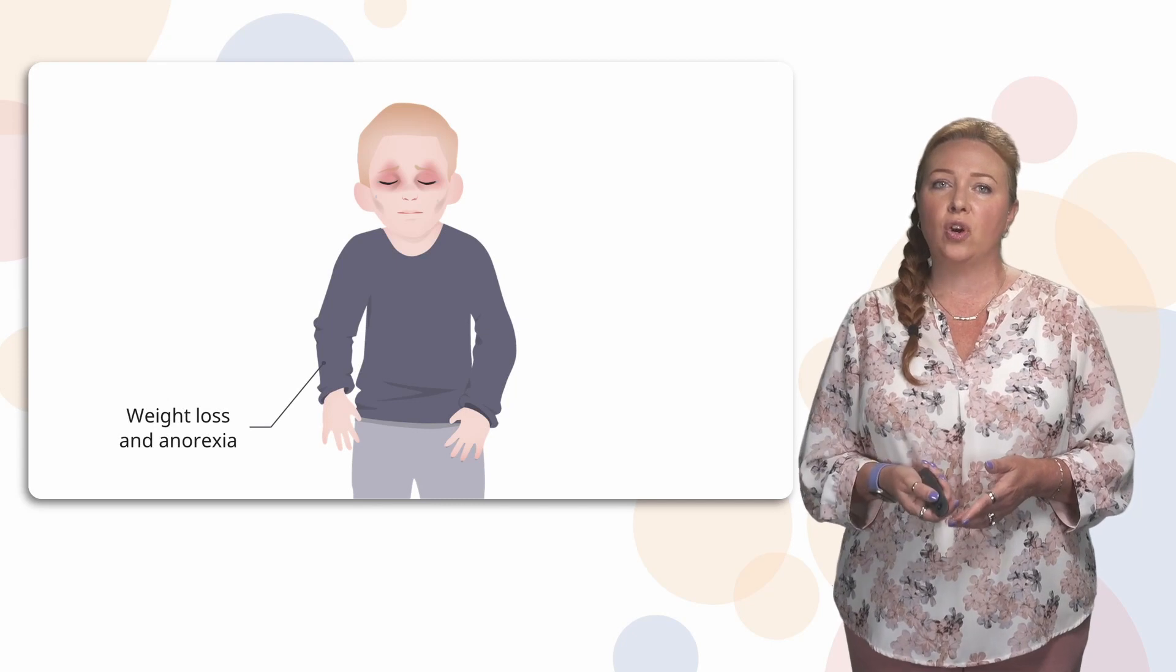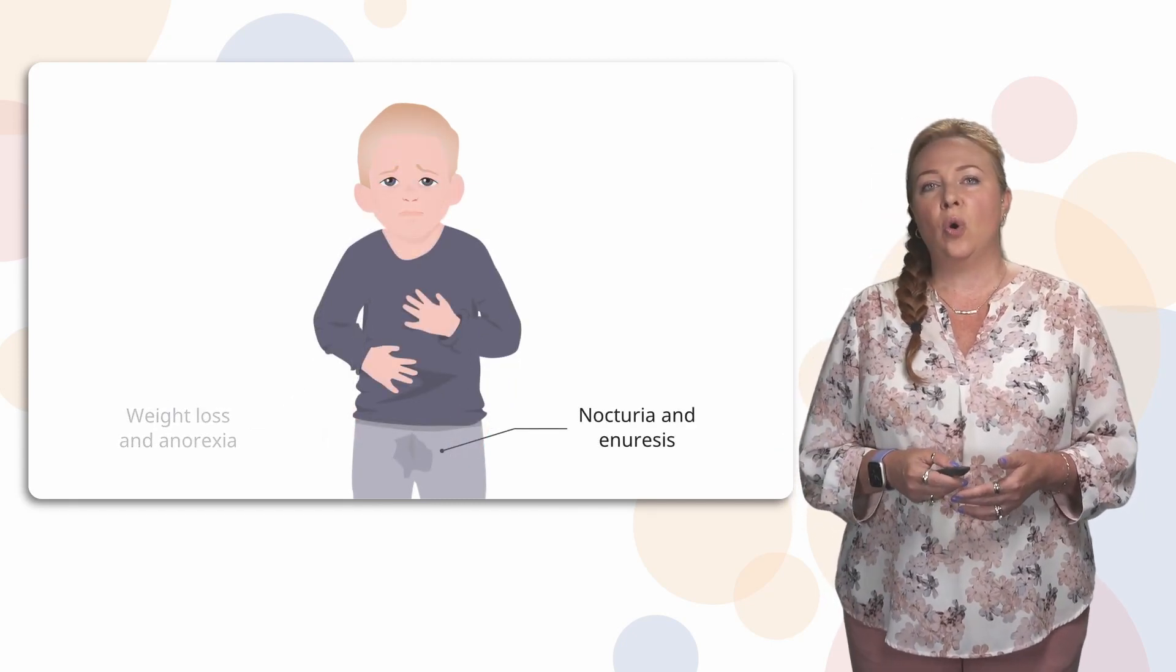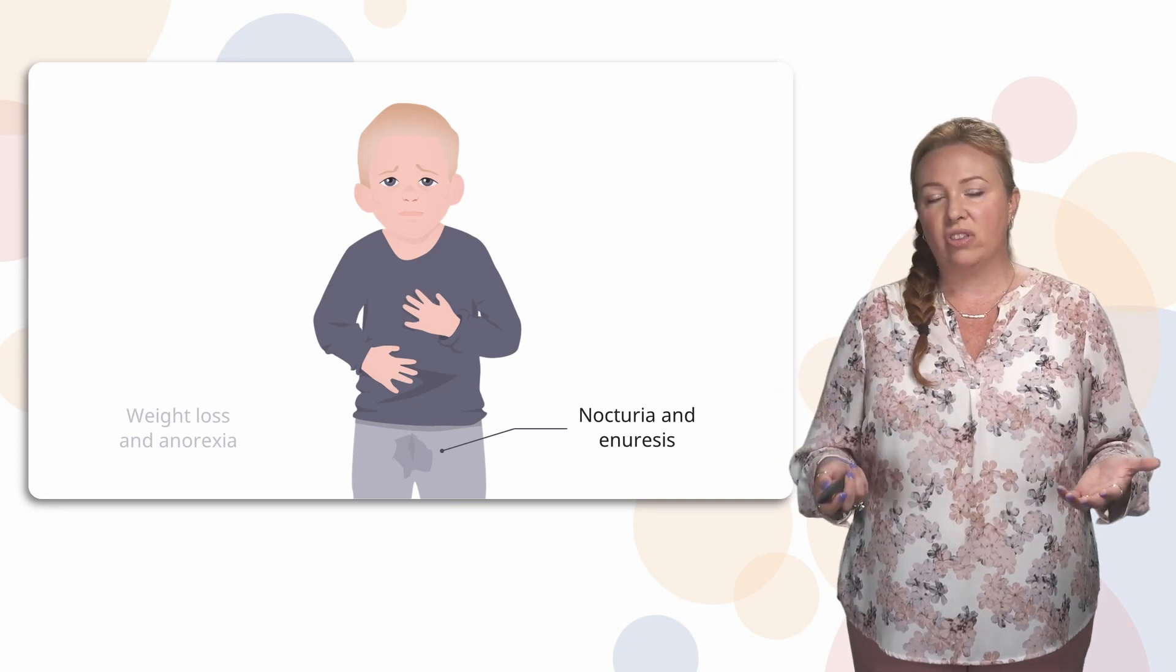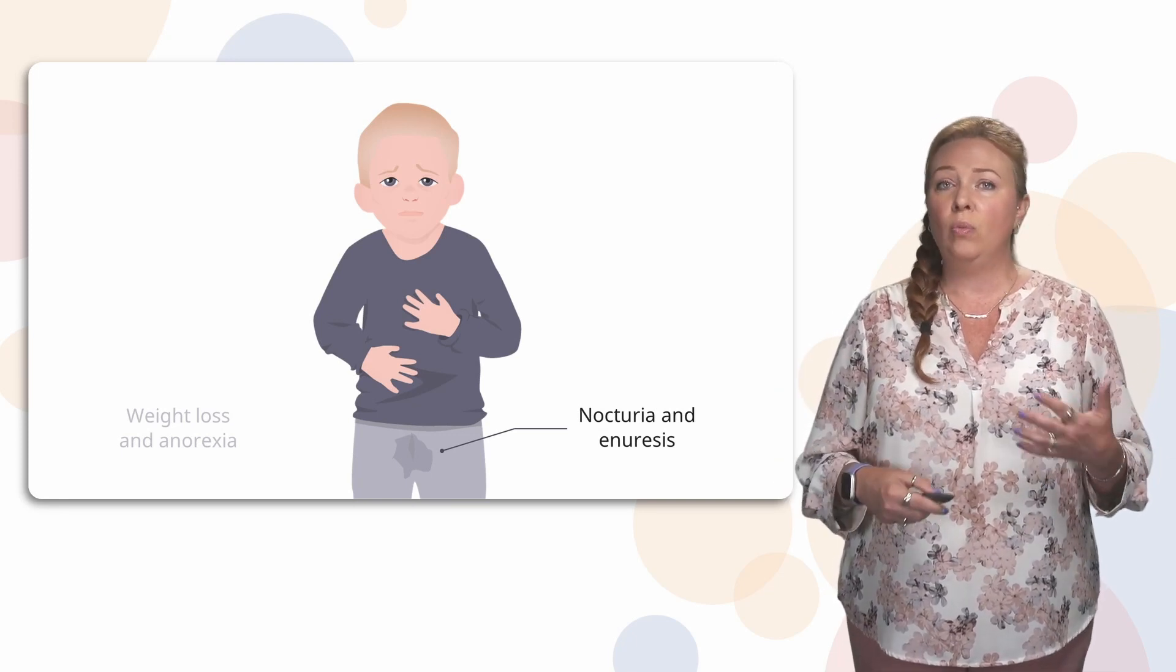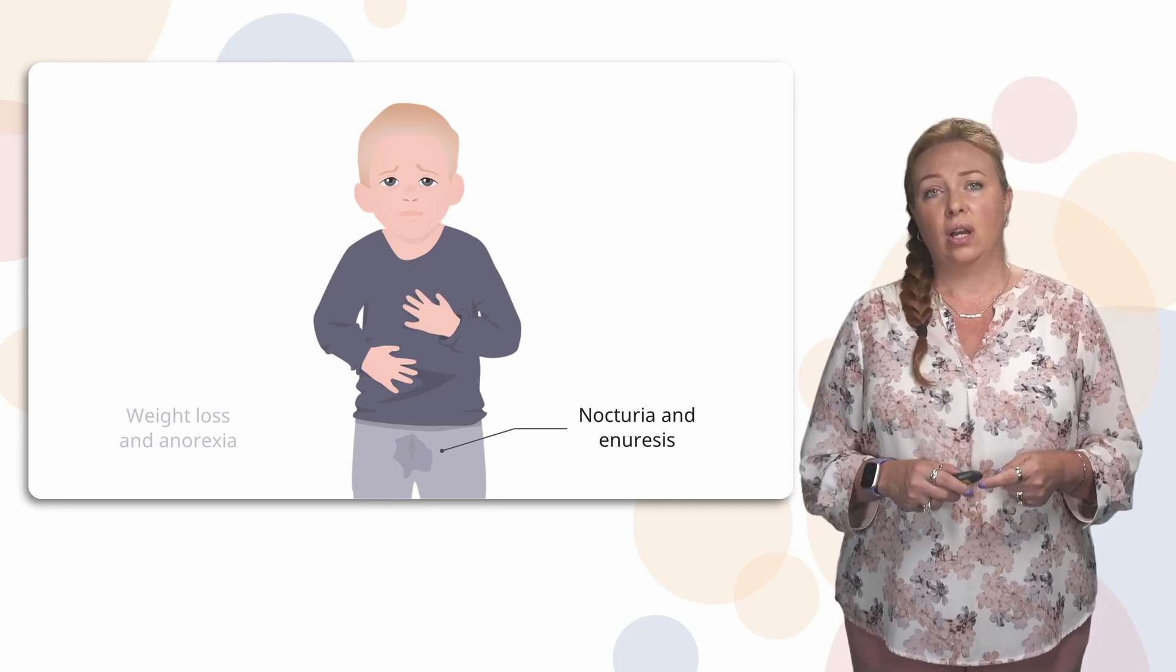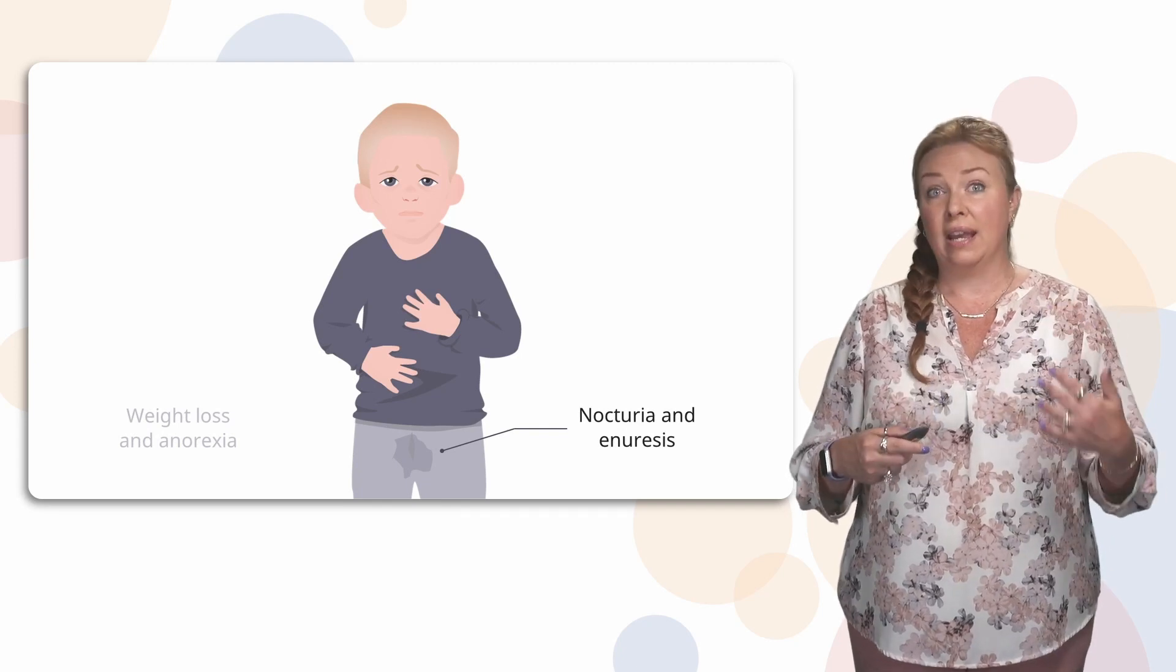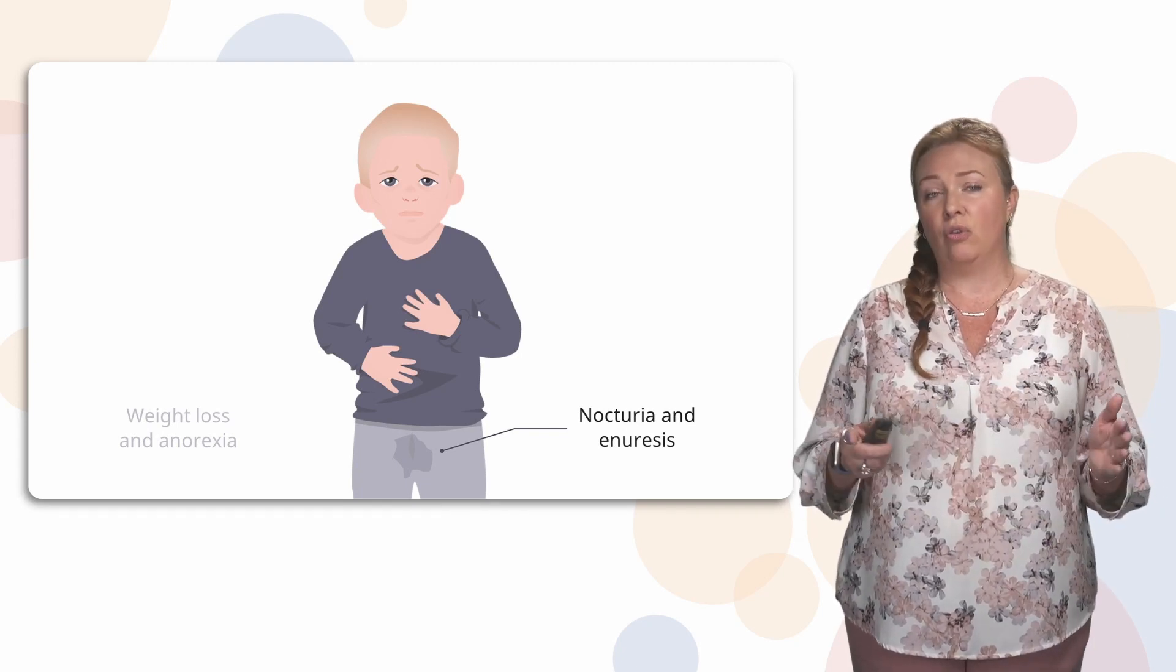Additionally, you might notice nocturia and enuresis. So getting up in the middle of the night to go to the bathroom, often multiple times, because remember they're drinking a lot because they're increasingly thirsty. And they have to get up and they're peeing a lot. So all night, overnight.